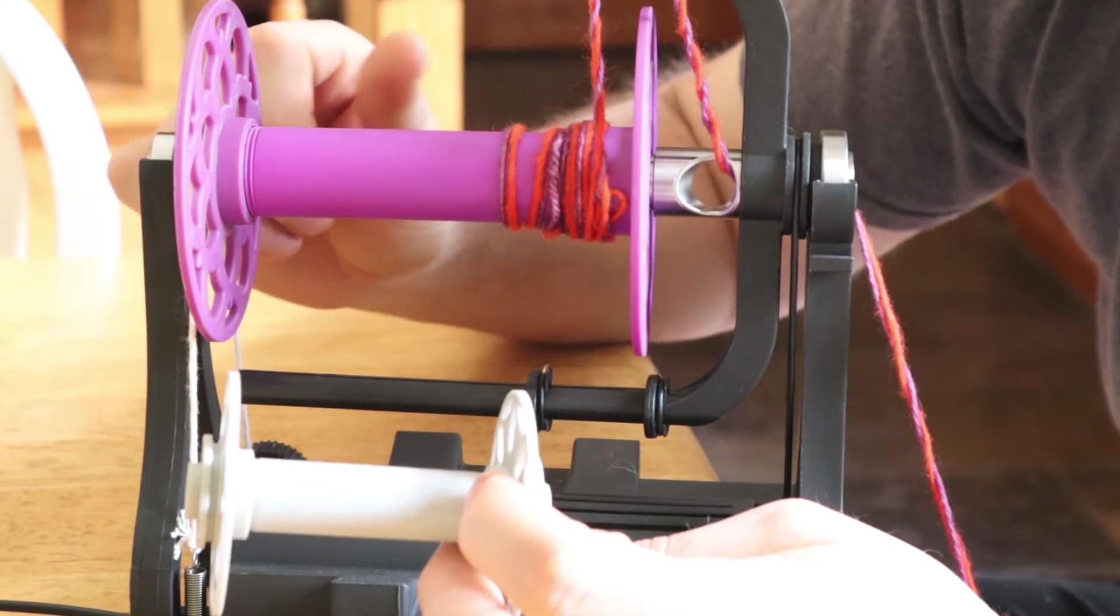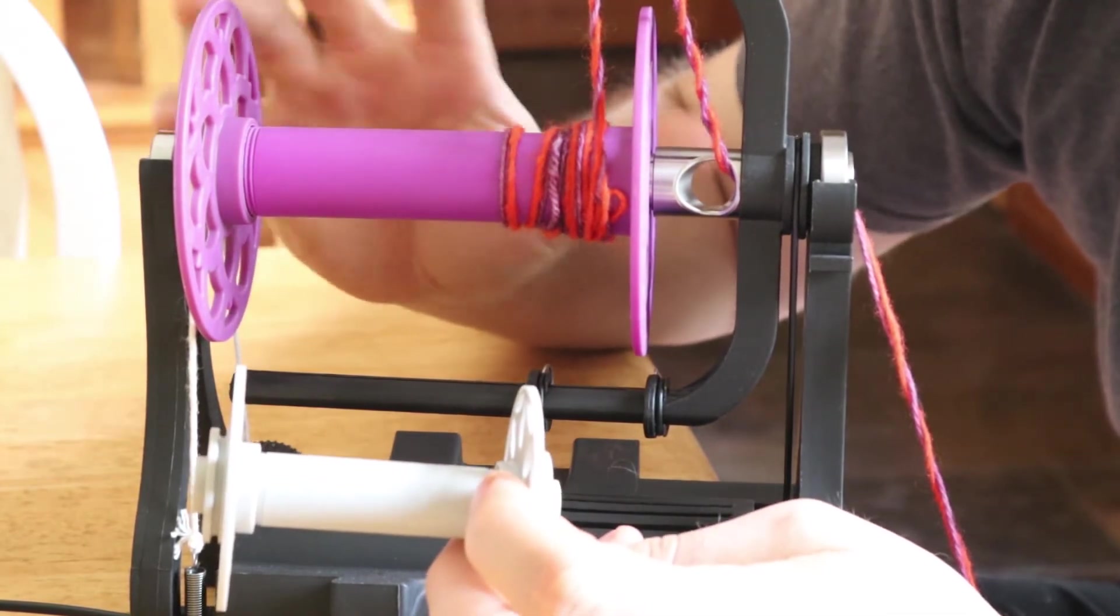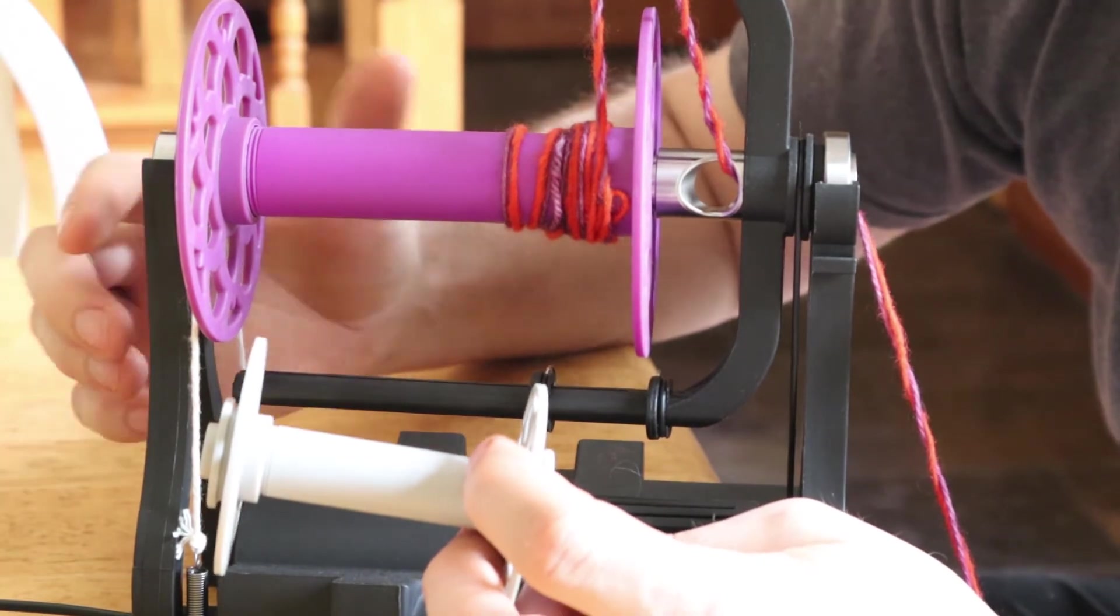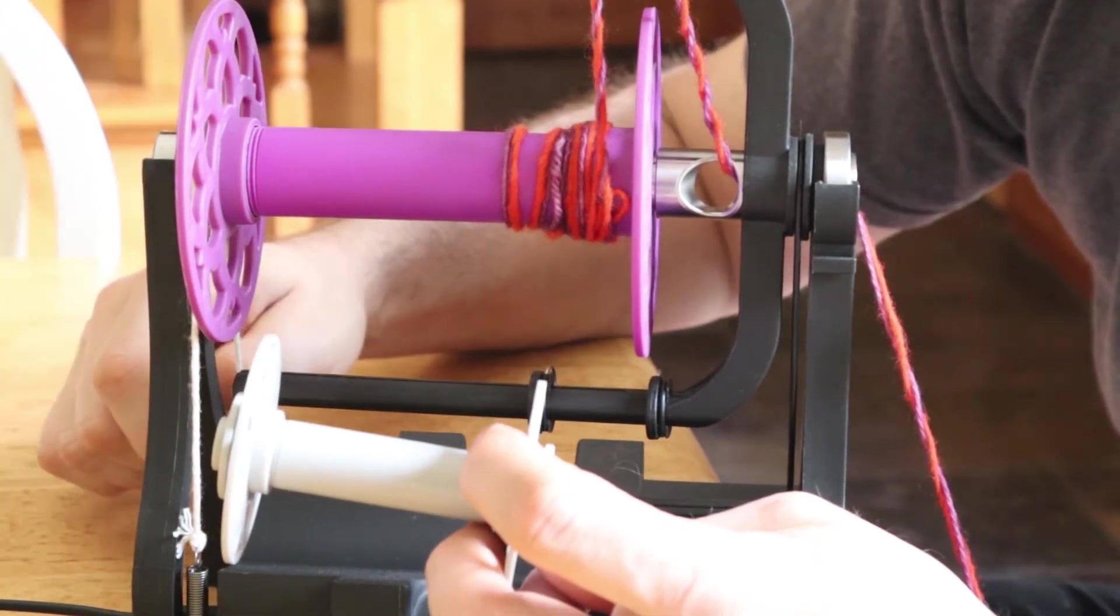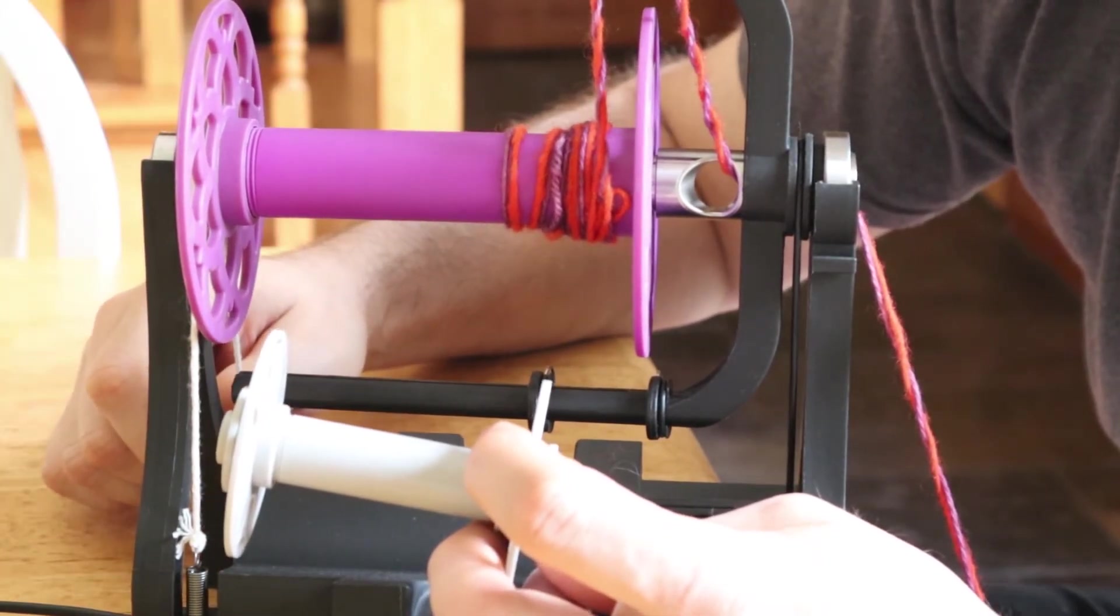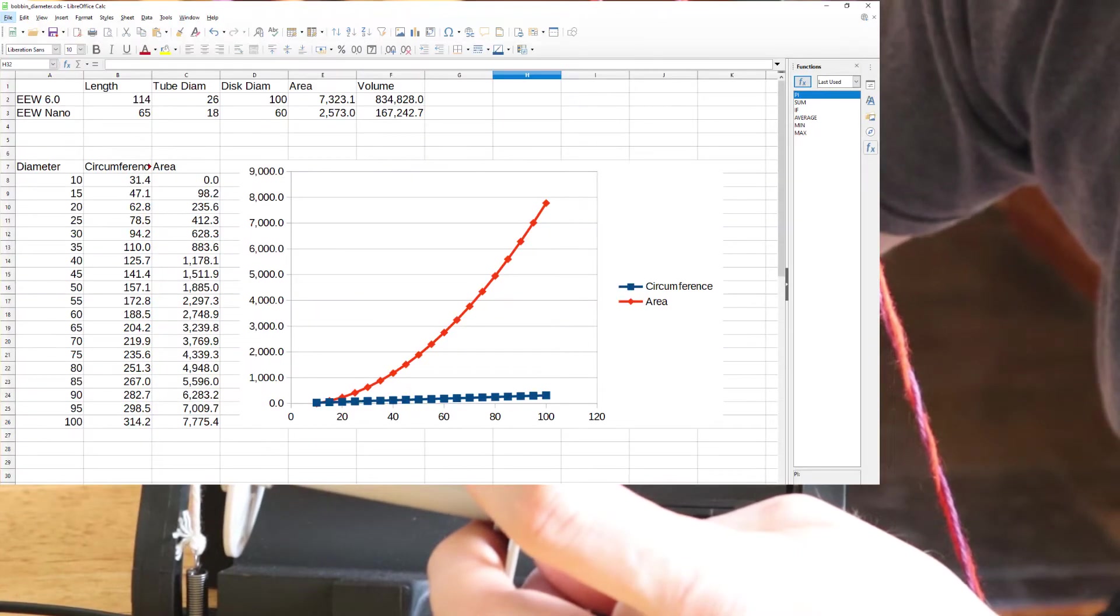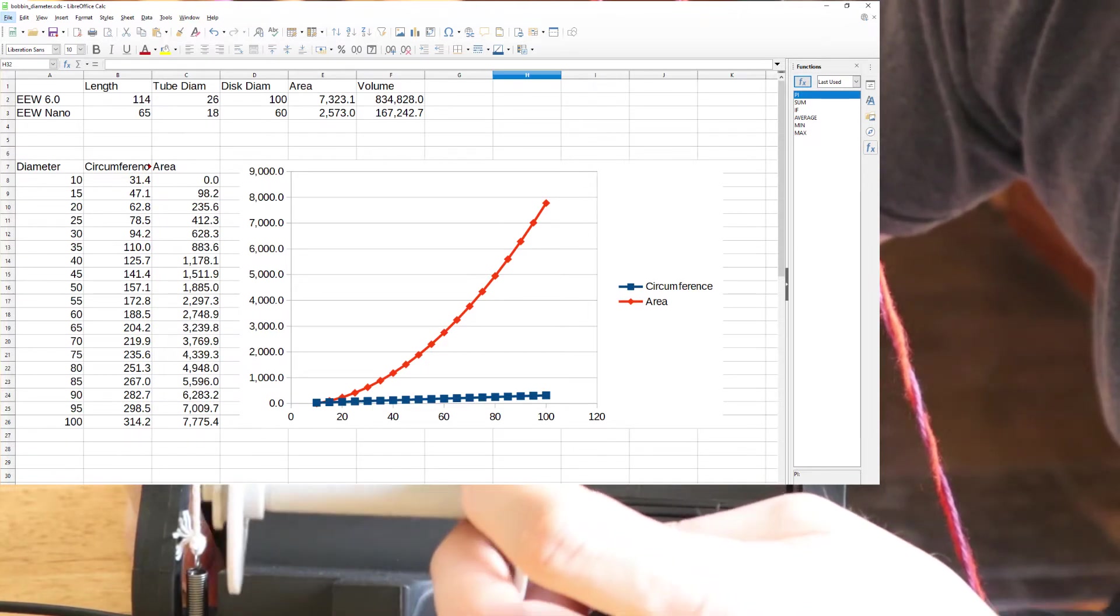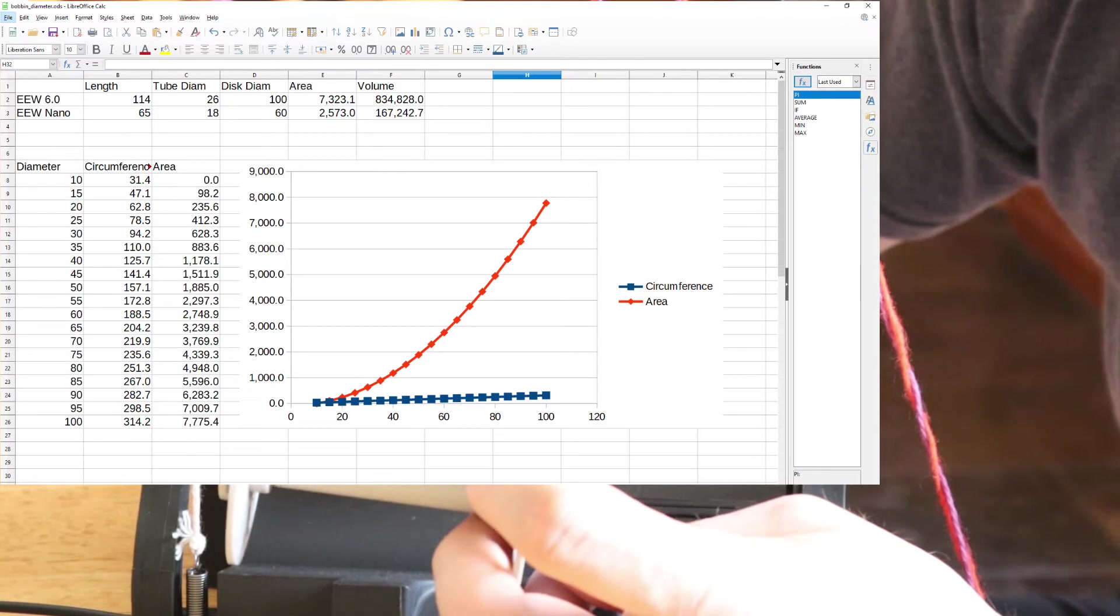It would actually be nice if you could represent volumes of a bobbin maybe in cubic millimeters and I've actually calculated this before. I'll show some graphing that I've done. You can calculate the volume and that's a much better way to calculate the capacity of a bobbin because it doesn't depend on the yarn density.